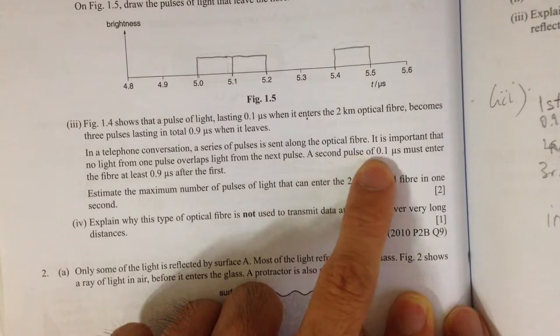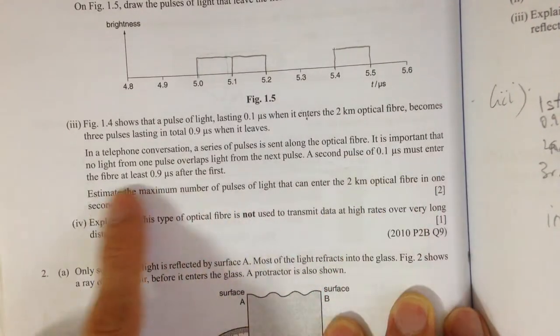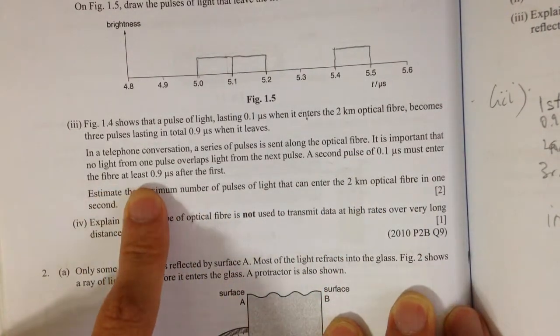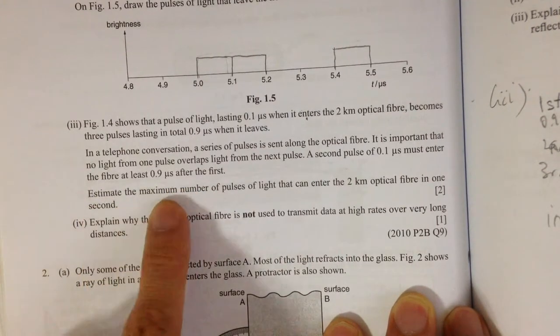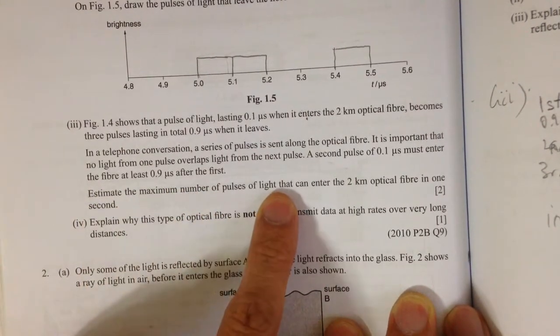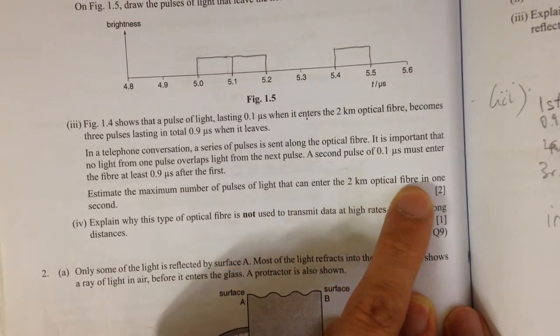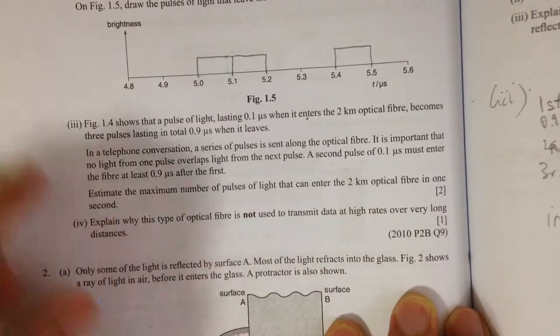A second pulse of 0.1 microsecond must enter the fiber at least 0.9 microseconds after the first. So estimate the maximum number of pulses of light that can enter the 2km optical fiber in one second.